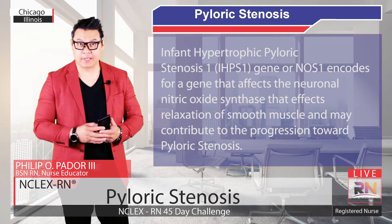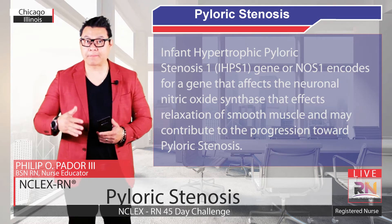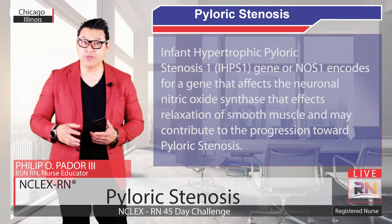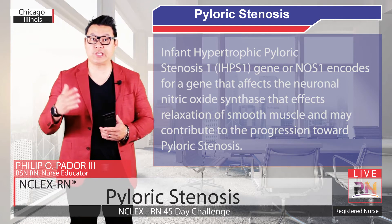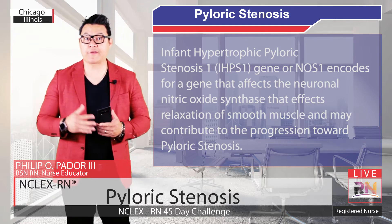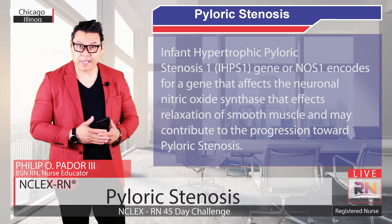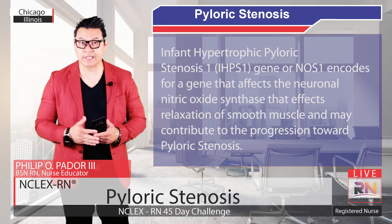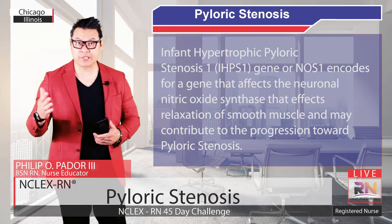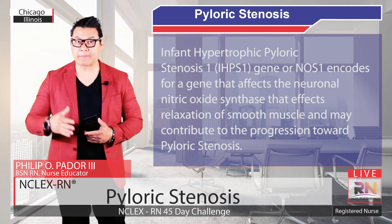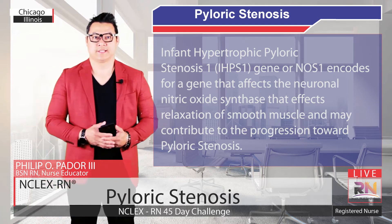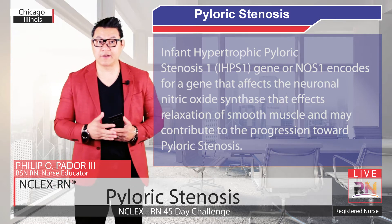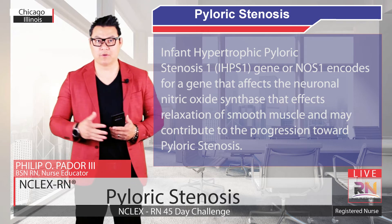There have been several genetic loci that predispose patients to pyloric stenosis that have been identified. For example, the infantile hypertrophic pyloric stenosis 1 or HPS1 gene, also known as NOS1, encodes for a gene that affects neuronal nitric oxide synthesis, which affects the relaxation of smooth muscles and may contribute to the progression toward pyloric stenosis. In addition, abnormalities in peptide-containing nerve fibers may also play a role.